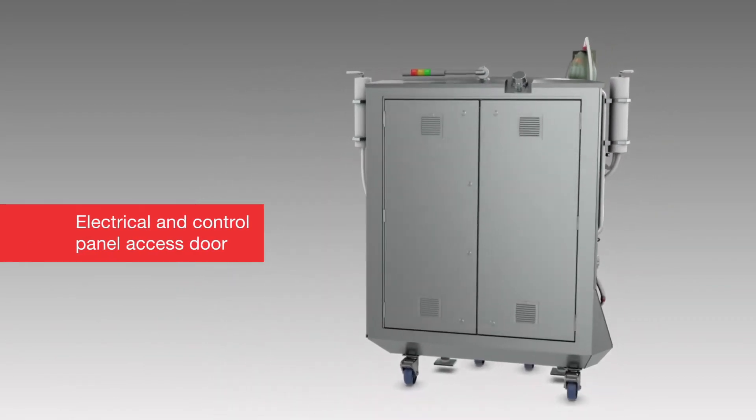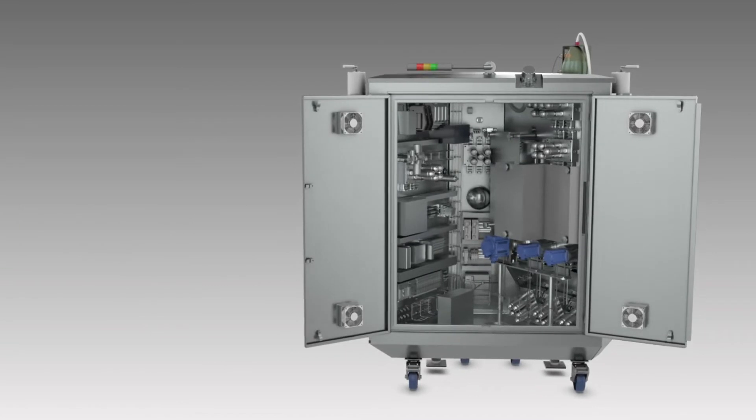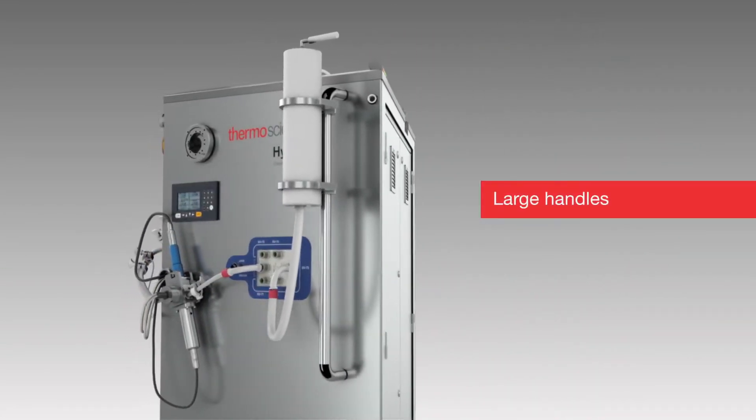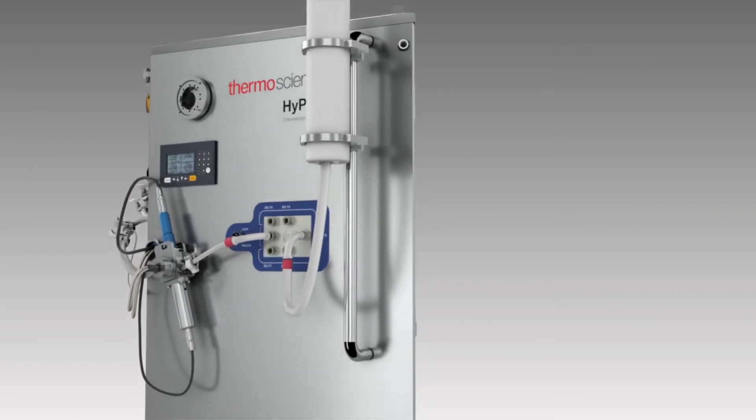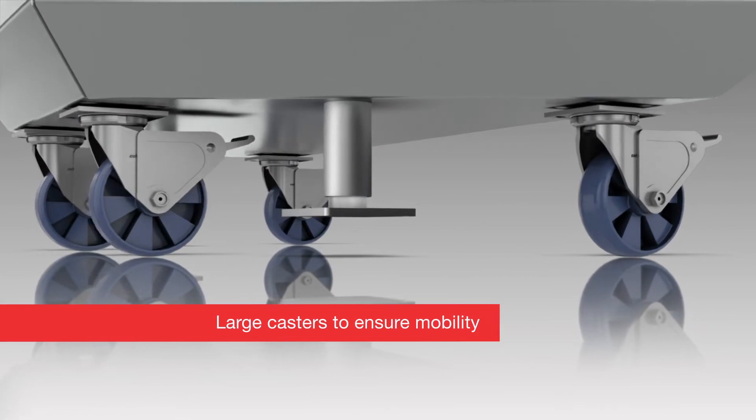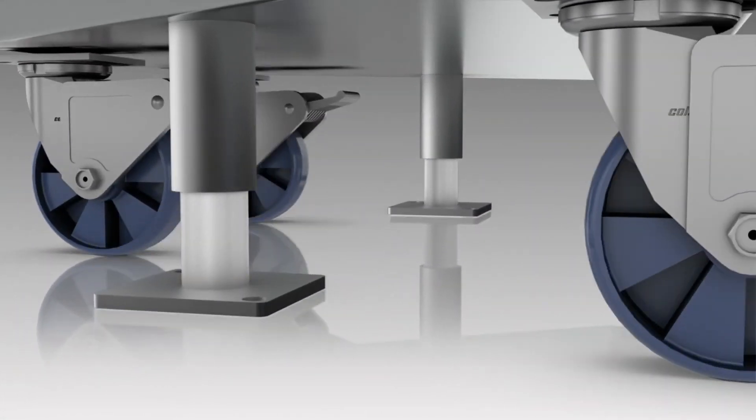Two large doors at the back of the unit provide access to the electrical and control system of the hardware. Large handles provided on the hardware help to move it safely and with minimal effort. To ensure mobility, large casters are used, specifically designed for use in clean rooms. The hardware includes leveling feet that can also be bolted to the floor for stability.